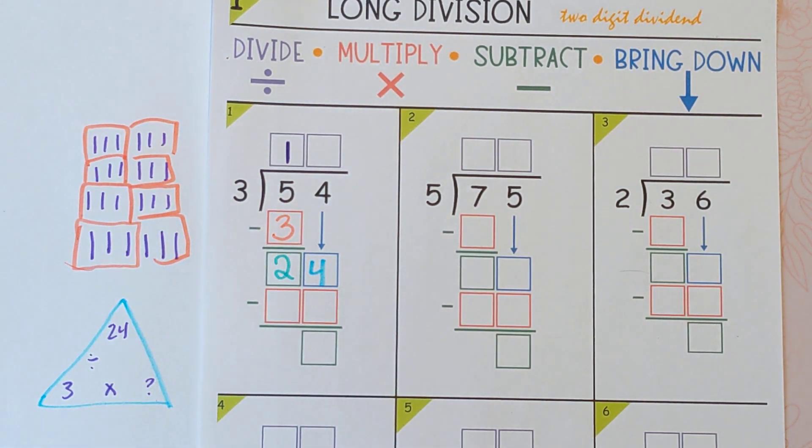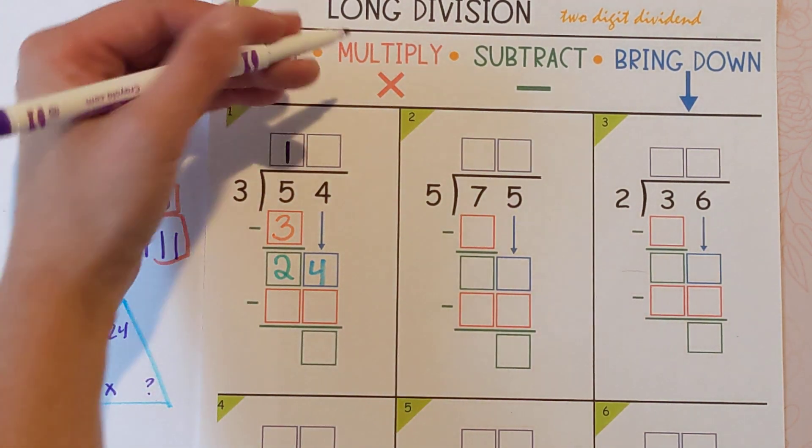Another thing you can do is skip count your threes until you hit 24. Either way, 24 divided by three is eight. We're going to put the eight up top because we were dividing.